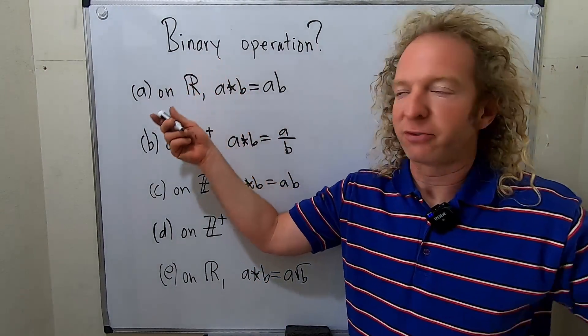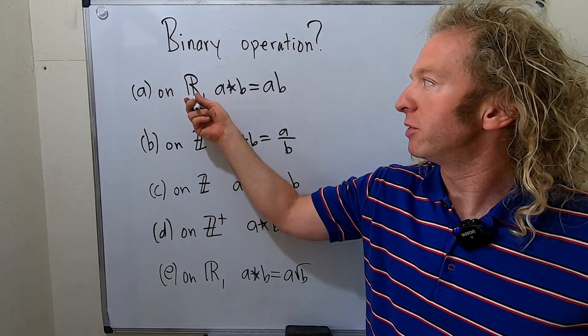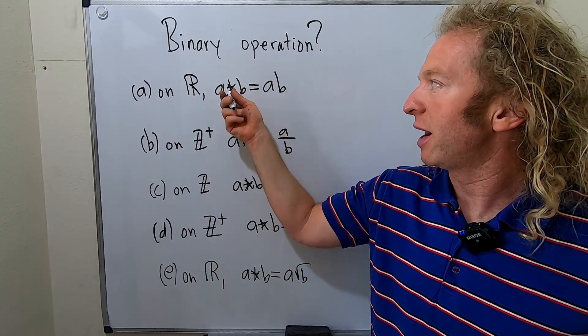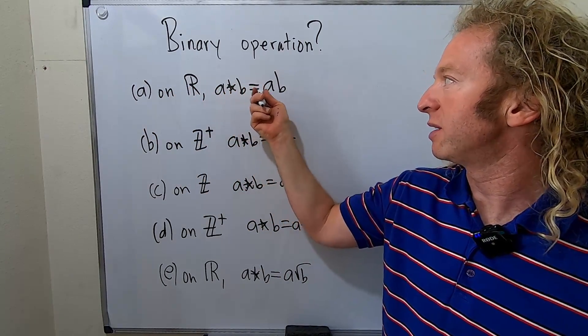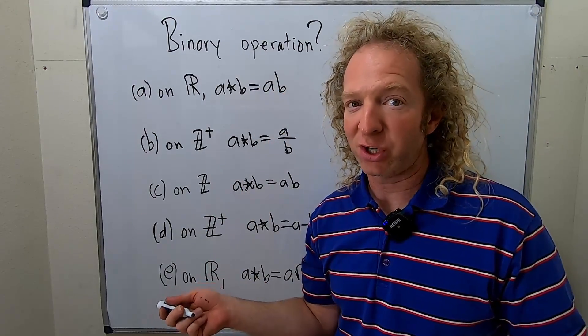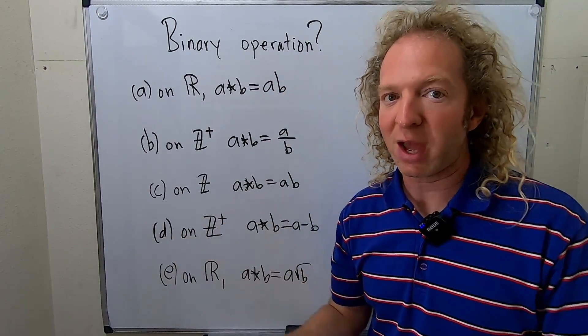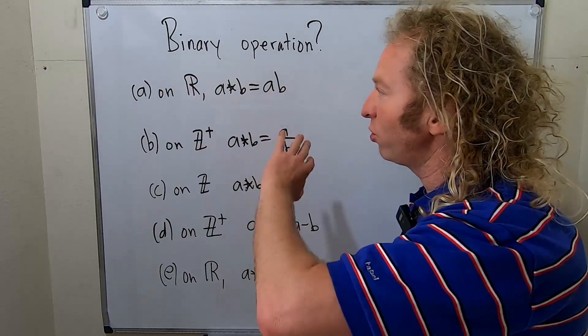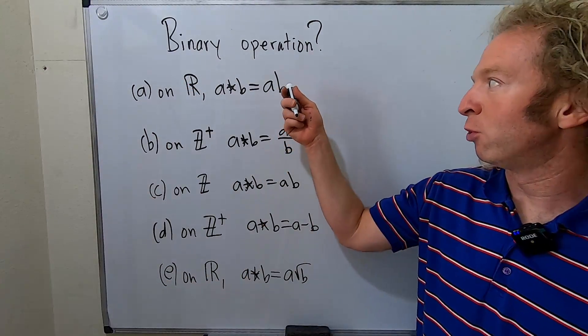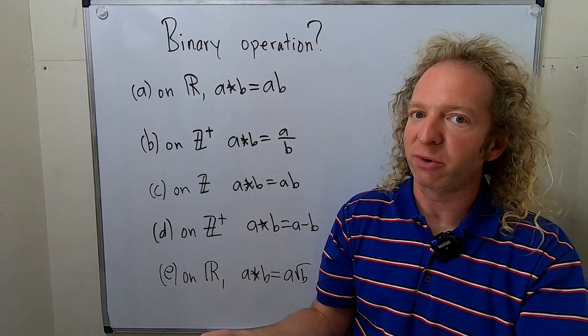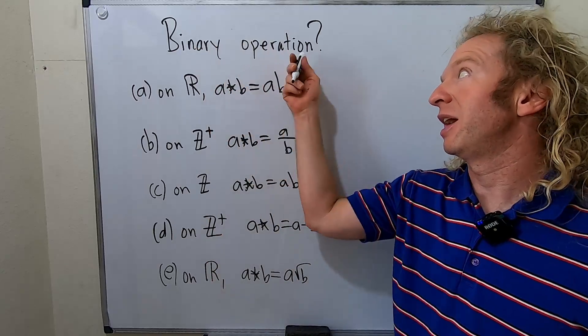For example, let's do the first one. On the set of real numbers, if we define star as a star b equal to a times b, is that a binary operation on the set of real numbers? What that means is, given any two real numbers, when you multiply them, do you get a real number? If that's true, then the answer is yes.